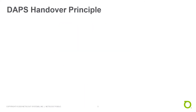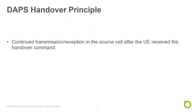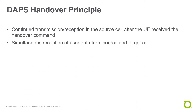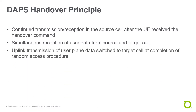The underlying principle of the DAPS handover is that there is continued transmission and reception in the source cell after the UE receives the handover command. We have simultaneous reception of user data from the source and target cell on the downlink. The uplink transmission of the user plane data is switched to the target cell after the completion of the random access procedure.